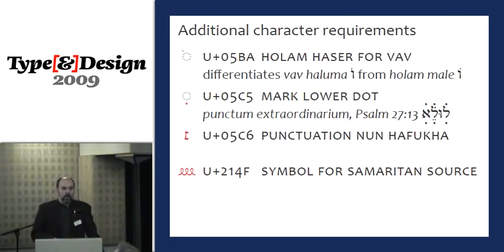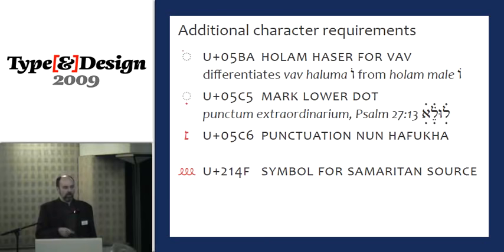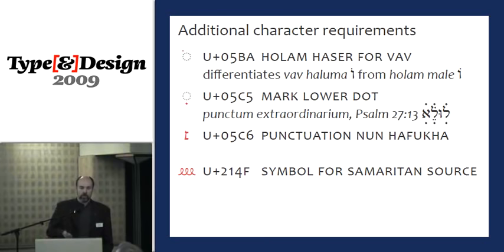The first stage of encoding and displaying any text, the first thing when making any font, is to figure out what the character set is. One of the challenges in scholarly publishing is that you'll go to Unicode and find that there are characters in the text that are not yet encoded. This is the problem I ran into in 2003 when we started on the SBL Hebrew — going through electronic editions of the Hebrew Bible text and finding things that were not in Unicode. Before we could make the font at all, we had to deal with this problem.